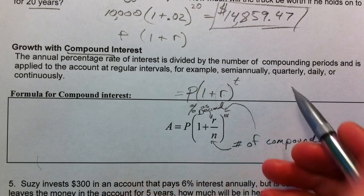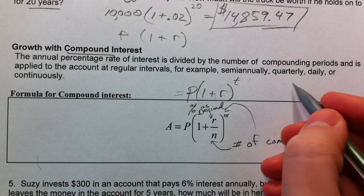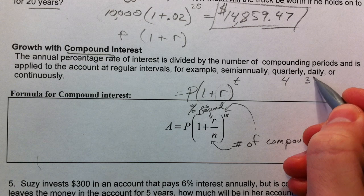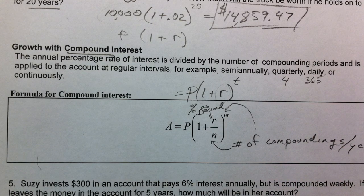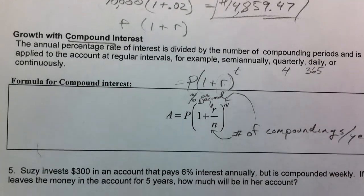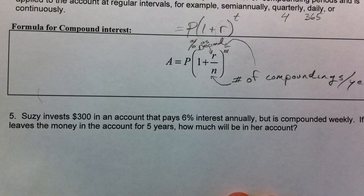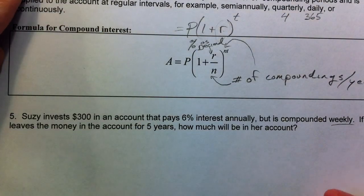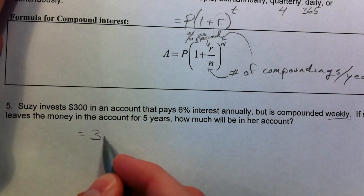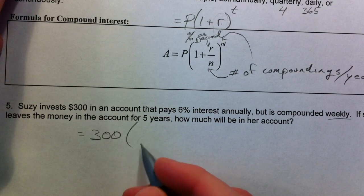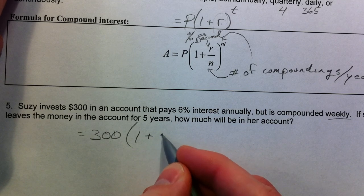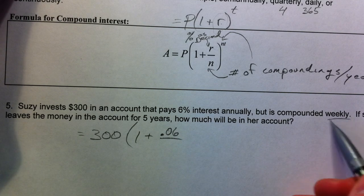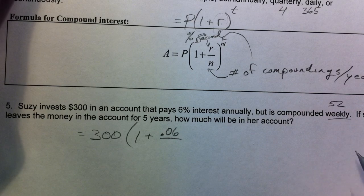So if you compound something quarterly, it's going to be four compoundings per year. If you compound something daily, 365 compoundings per year. Or in our case, Susie's going to invest $300 in an account that pays 6% annually. But it's compounded weekly. And so we take our $300 that we had, 1 plus our 0.06, and we're going to take that and divide it by how many times it's compounded in a year. Well, if it's weekly, that means there's 52 weeks in a year.